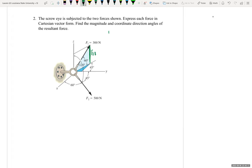F1z will be equal to positive 300 sine 60 because it is across from this 60 degrees.